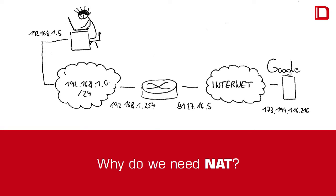So you have two networks. This is your local network on your site, or your home office - some local network. Then you have a router, which could be your provider's router or a MikroTik router. It could be a MikroTik router.